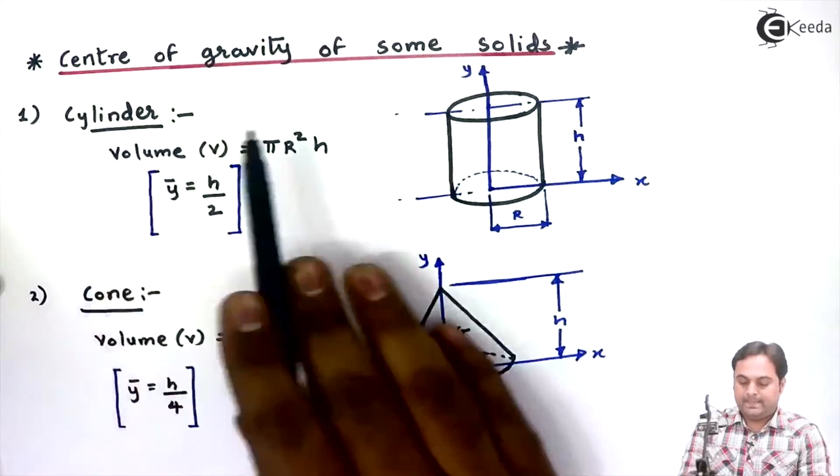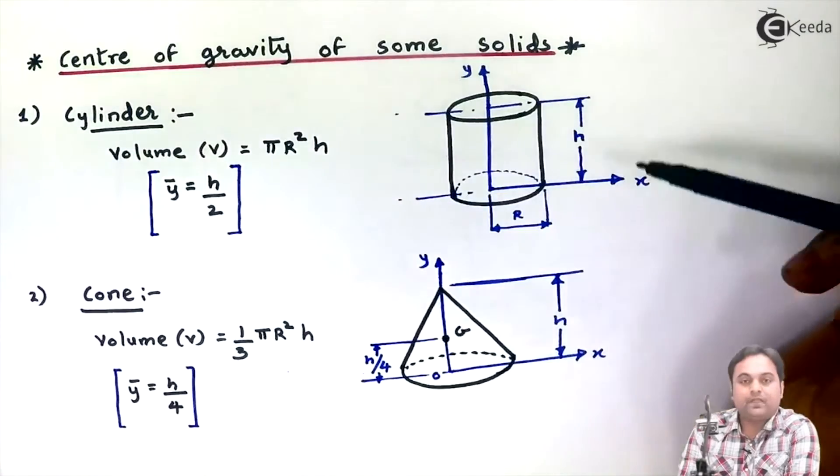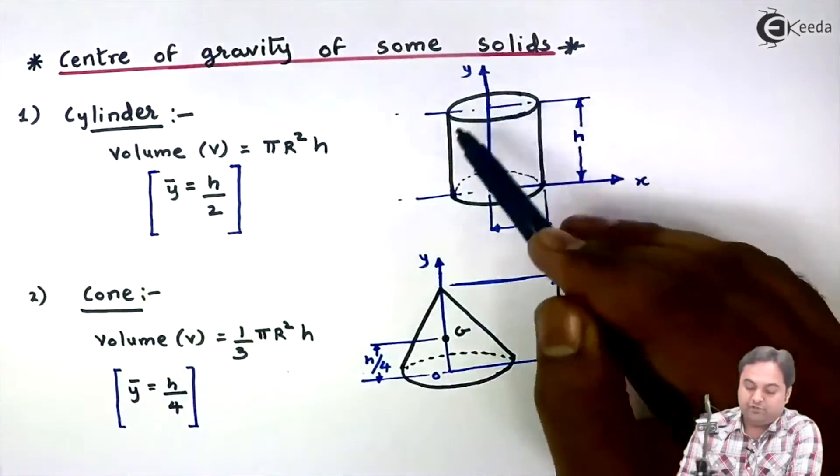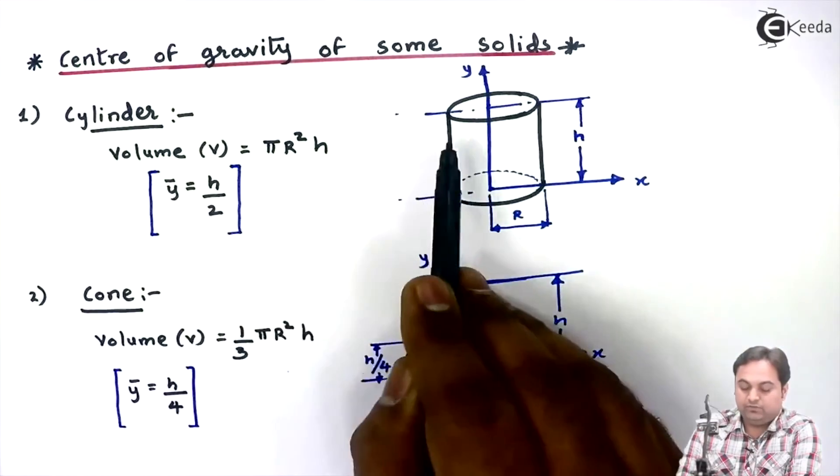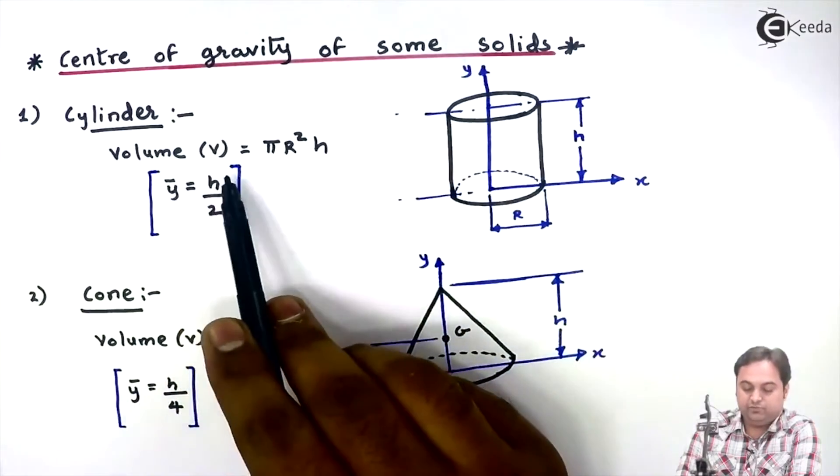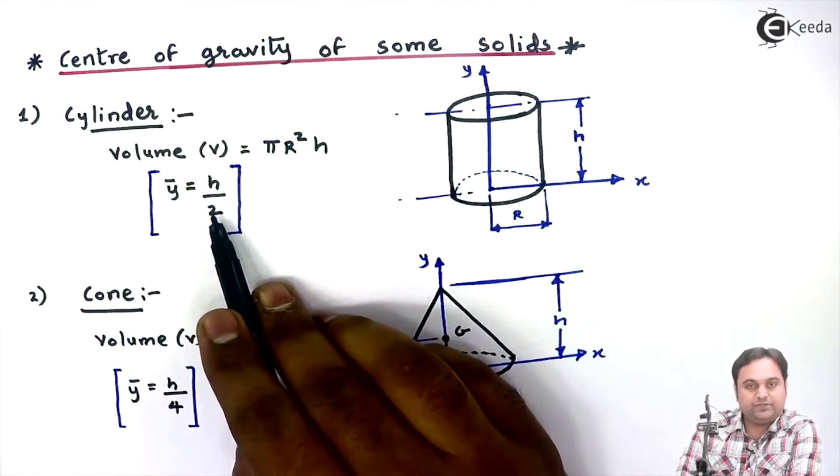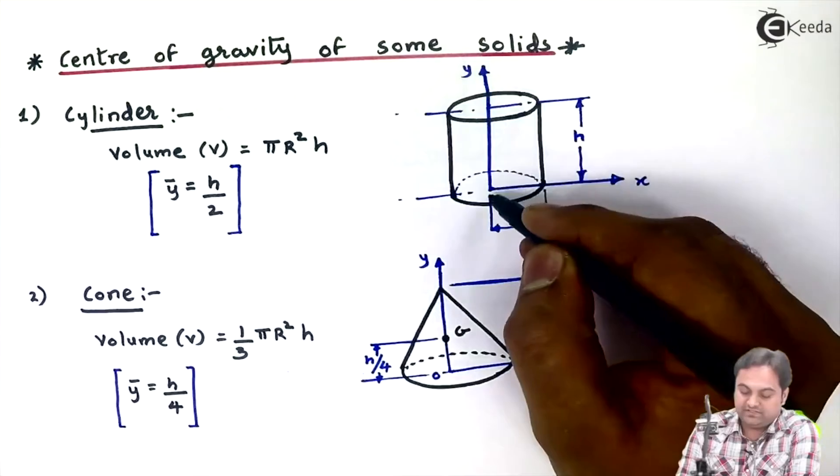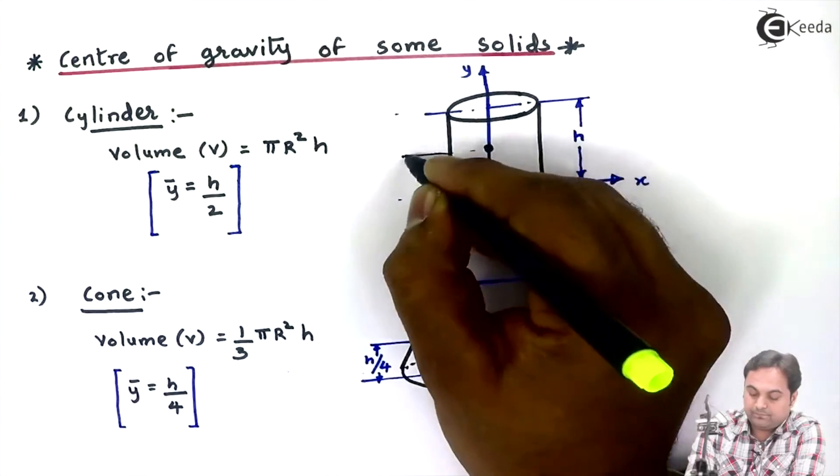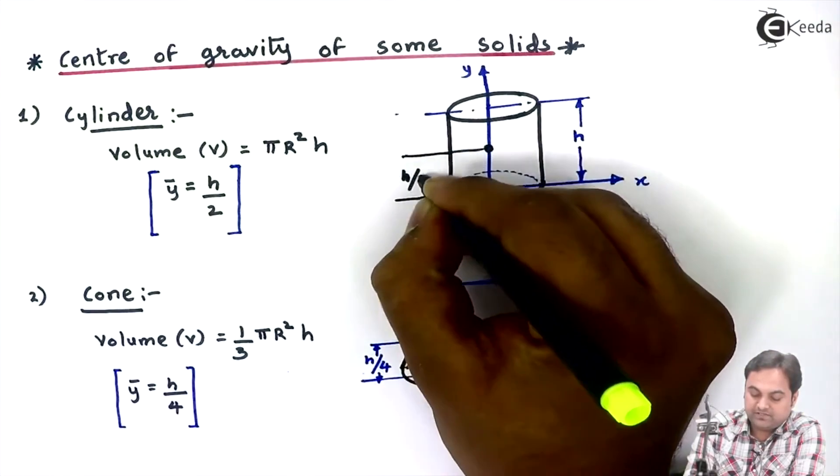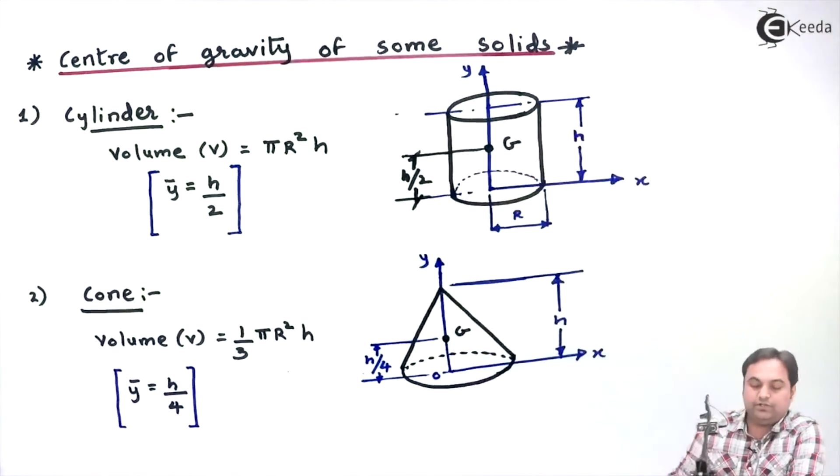The first one is the cylinder. Here we have a cylinder whose radius is capital R and height of the cylinder is H. It is placed on an axis system X and Y. For this cylinder, volume would be given by πR²H, and as we are dealing with center of gravity, we have to consider the volume not area. Y bar will be the location of CG with respect to X axis and given by H/2. So the CG for this cylinder would be exactly at half of H. So here is the center of gravity for a cylinder.